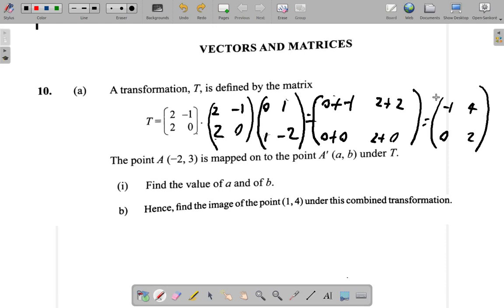The combined transformation is (-1, 4; 0, 2). To find the image of that point, we're going to multiply the matrices. So we have (-1, 4; 0, 2) multiplied by (1, 4).